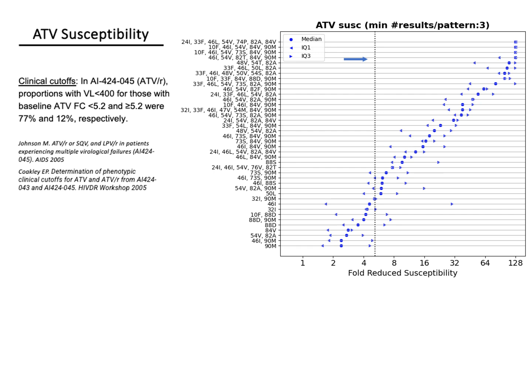Boosted atazanavir has a lower genetic barrier to resistance than either boosted lopinavir or boosted darunavir. An analysis based on one clinical trial in which boosted atazanavir was used in PI-experienced patients found that there was a marked drop-off in virologic suppression for isolates with a greater than 5-fold reduction in atazanavir susceptibility. The figure shows that this level of reduction can be reached with certain individual drug-resistance mutations such as N88S and I50L, and with certain combinations of 2 or 3 drug-resistance mutations.